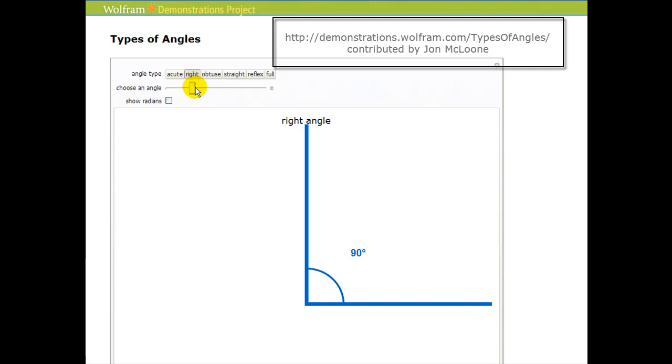As soon as we increase the angle past 90 degrees but less than 180, it is called an obtuse angle. So here's an illustration of obtuse angles.